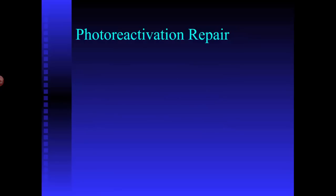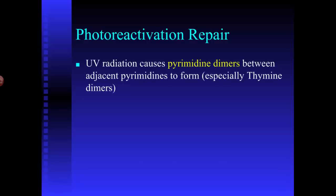We'll start with photoreactivation repair. In general, photoreactivation repair involves repairing damage done by ultraviolet radiation. Ultraviolet radiation has enough energy that it can penetrate through your cell membranes and knock electrons off of the DNA molecule. When you remove electrons from something, it creates an ion, so ultraviolet radiation is called ionizing radiation.